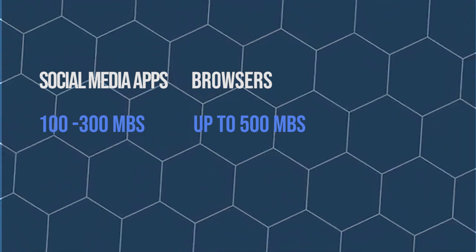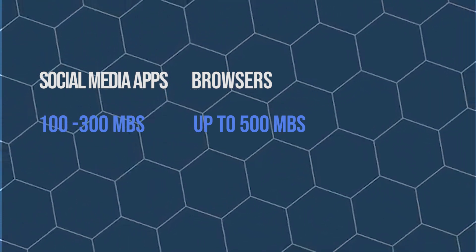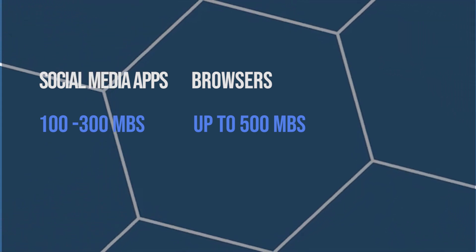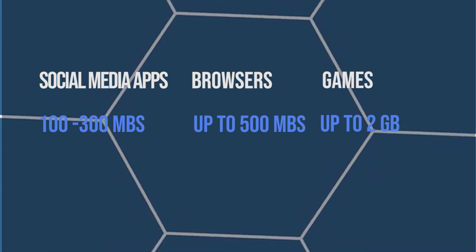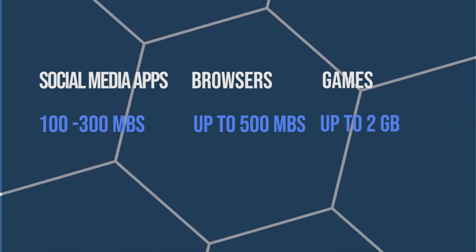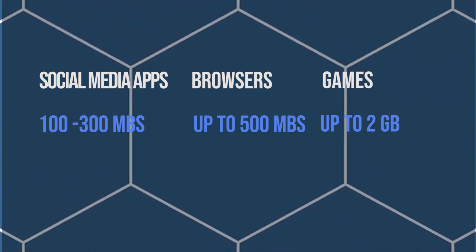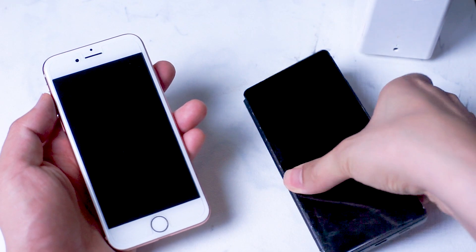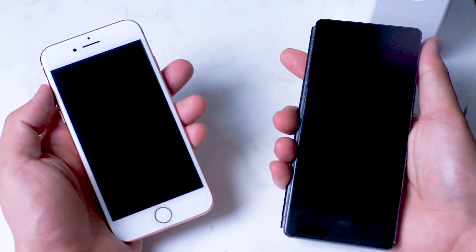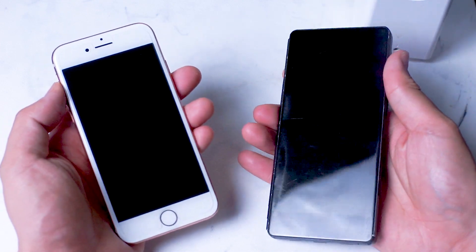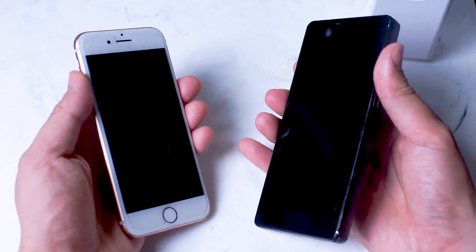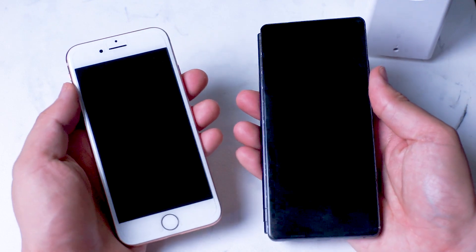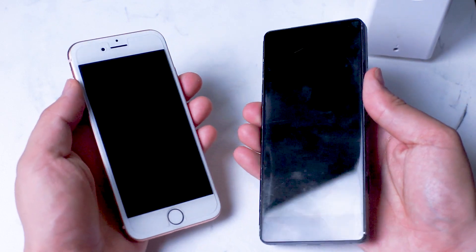Finally, we have games. Games, depending on how graphic intensive they are, can range anywhere from 100 to 500 megabytes of RAM usage. Some of the bigger, more demanding games like PUBG or FIFA will use much more RAM and can require up to 1 gigabyte of memory. When you add up all these numbers for social media apps, browsers, and games — plus the RAM cost of the operating system itself — you can begin to see why we have 6, 8, and 12 gigabytes of RAM on modern phones.